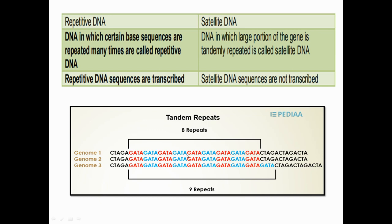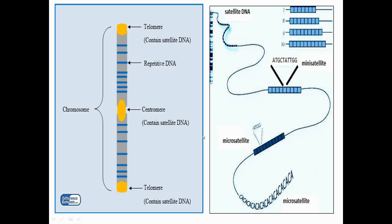To understand tandem repeats: you can see a GATC sequence here being repeated in genome one, two, and three. Genomes one and two have the same number of repeats, while genome three has more repeats. These repeats are referred to as tandem repeats, and they form the basis for the DNA fingerprinting technique.